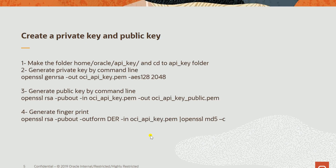So I go to the steps for how we create a private key and public key. Step one: create a folder — in my environment, I create the API key folder under the Home/Oracle folder and browse to the API key. Step two: use the OpenSSL command line to generate a private key. Step three: create a public key by command line. Step four: generate a fingerprint.